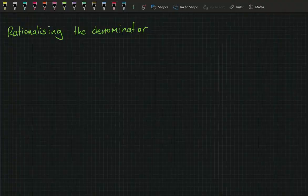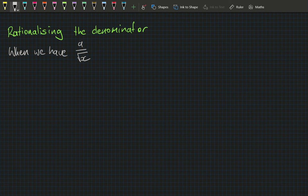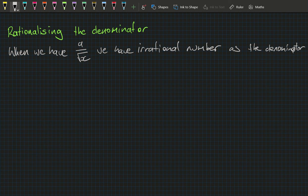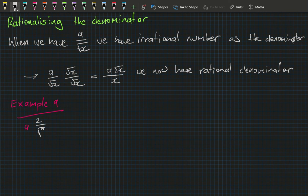Rationalizing the denominator applies when we have a divided by square root of x — an irrational denominator. By multiplying by square root of x over square root of x, we get a times square root of x all divided by x, giving a rational denominator. Example 9a: 2 divided by square root of 3. Multiply by root 3 over root 3 — root 3 times root 3 becomes 3, and 2 times root 3 stays as 2 root 3 — giving 2 root 3 over 3.